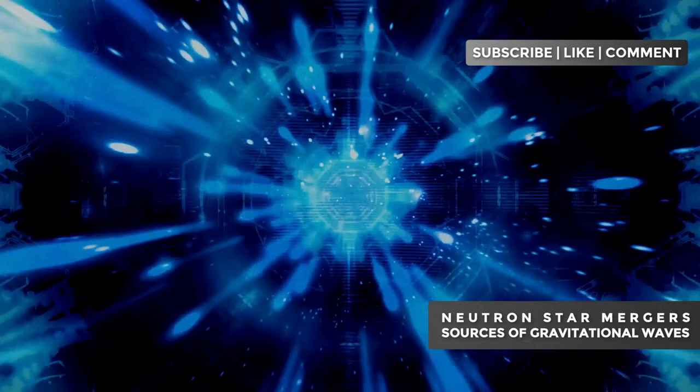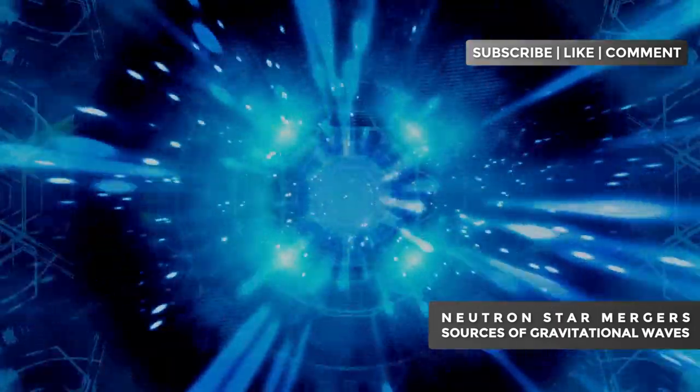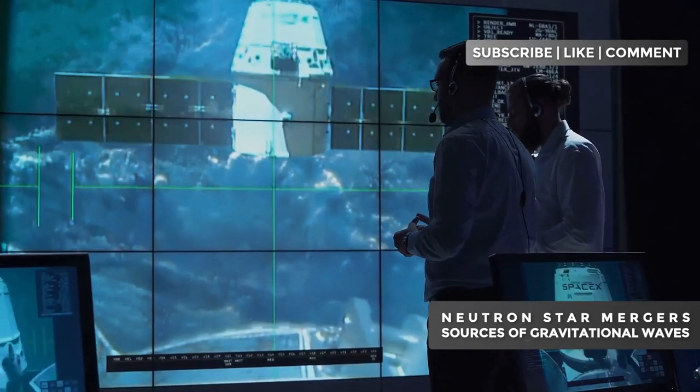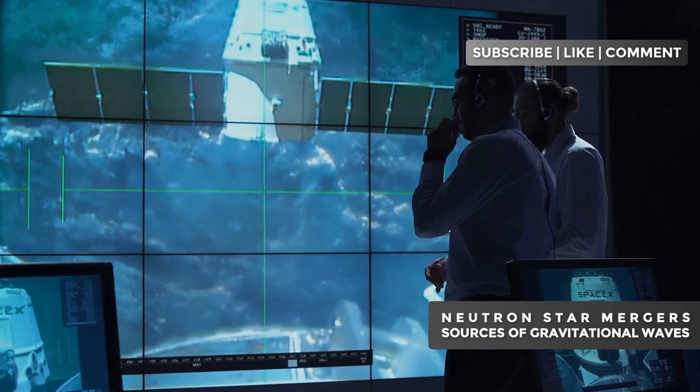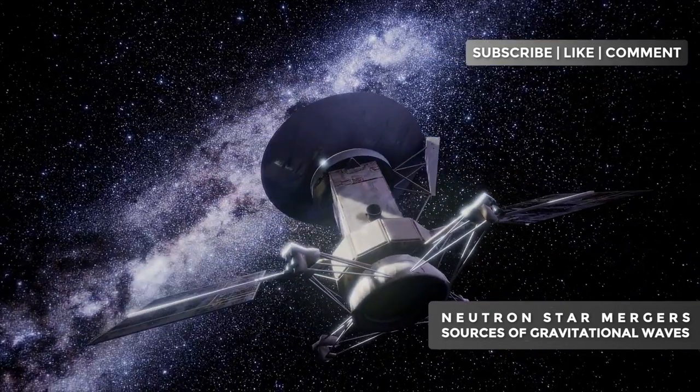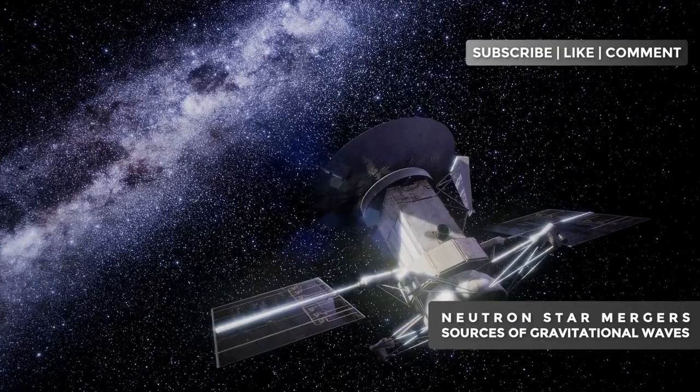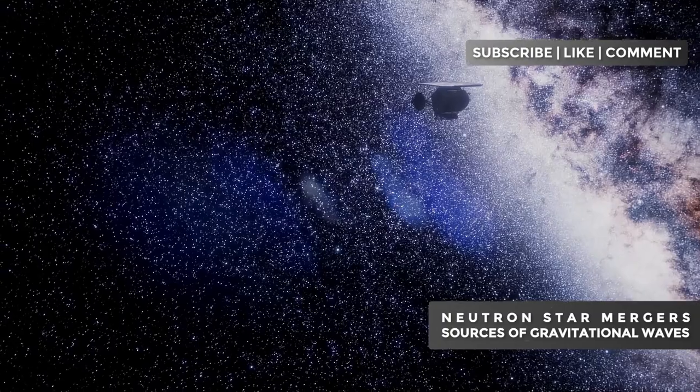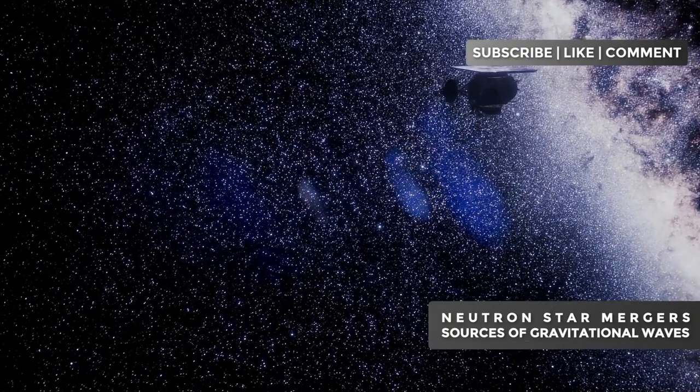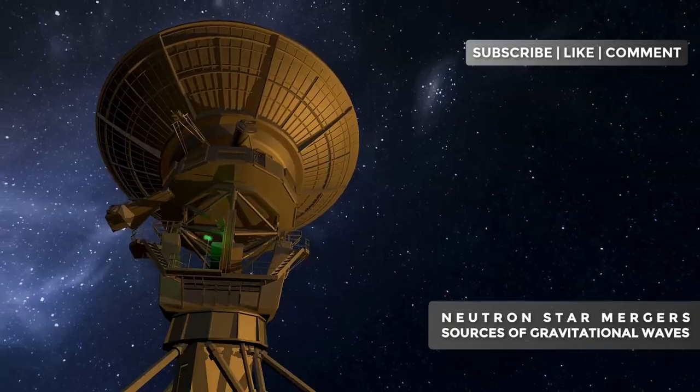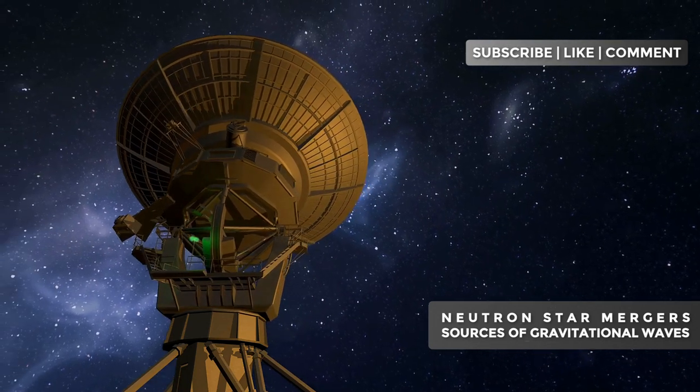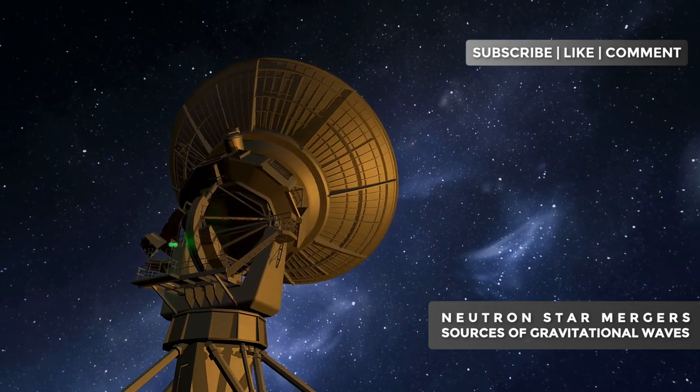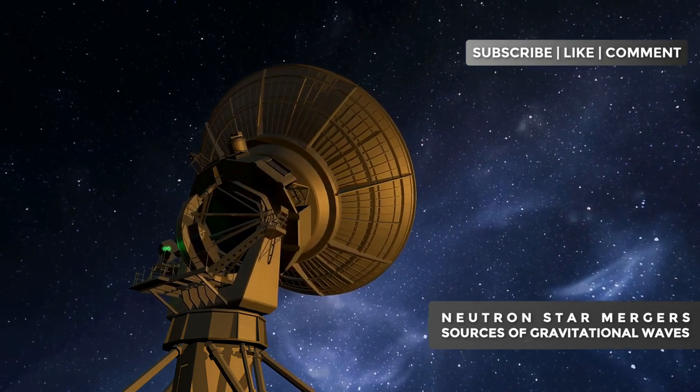Imagine a detector so sensitive it can feel the vibrations of space-time caused by events that occurred billions of years ago, when the universe was much younger. Additionally, astronomers are planning space missions dedicated to gravitational wave detection. LISA, or the Laser Interferometer Space Antenna, a collaboration between NASA and ESA, will consist of three spacecraft forming a giant equilateral triangle in space, with each side measuring 1.55 million miles. Operating in the vacuum of space, free from earthly disturbances, LISA will be able to detect gravitational waves of much lower frequencies, potentially revealing mergers of supermassive black holes at the center of galaxies.